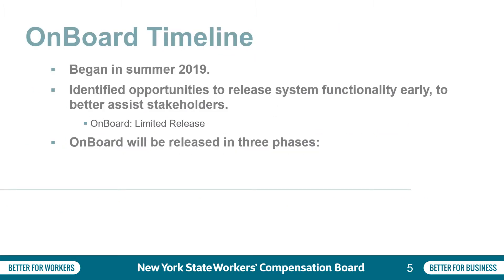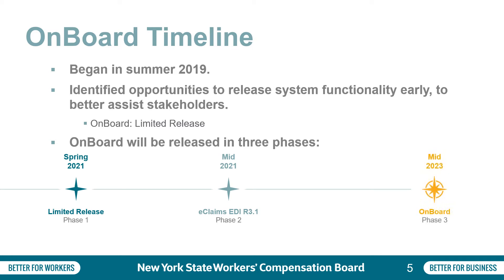This multi-year project initially began in the summer of 2019, with the full system being available in mid-2023, but we identified opportunities to implement some early process improvements and functionality sooner in what we are referring to as Onboard Limited Release. Onboard Limited Release is scheduled for release during spring of 2021. In mid-2021, Phase 2 will be available, which includes eClaims EDI 3.1. The complete Onboard system is expected to release in mid-2023.